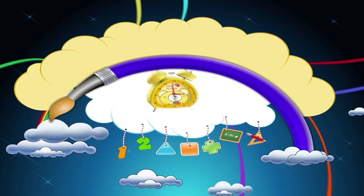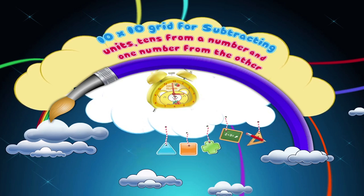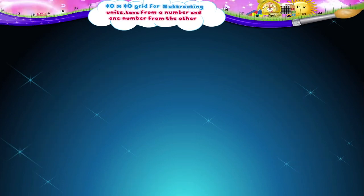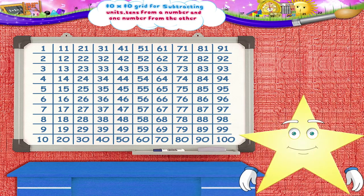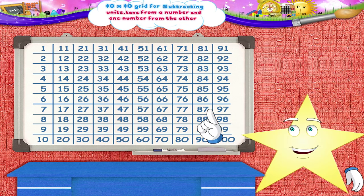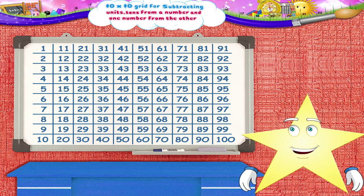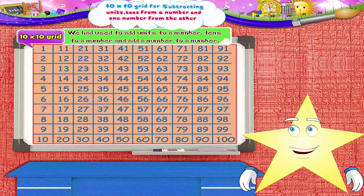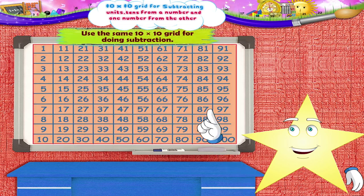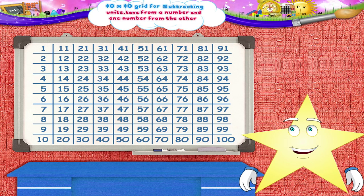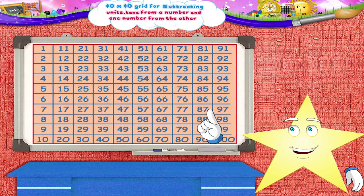We're going to use the 10x10 grid for subtracting units, tens from a number, and one number from the other. It's time to have some fun again with our magnetic whiteboard! I'm sure you remember the 10x10 grid we used to add units to a number, tens to a number, and add a number to a number. Now we are going to use the same 10x10 grid for doing subtraction. Let's first learn how to subtract units using the 10x10 grid.